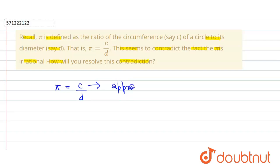It is an approximate measure of circumference of a circle. So π equals c by d gives only an approximate value.